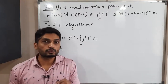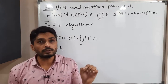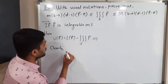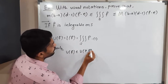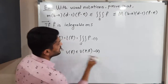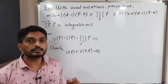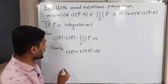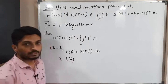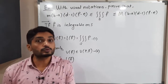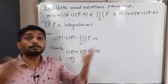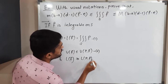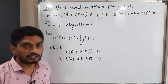Two important inequalities follow. Since Uf is the infimum — the minimum — of all upper sums, we clearly have Uf ≤ U(P,f) for any partition P. Similarly, since Lf is the supremum — the maximum — of all lower sums, we have Lf ≥ L(P,f) for any partition P.